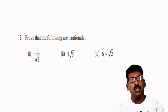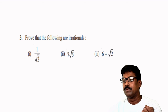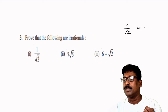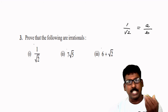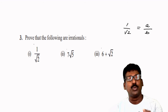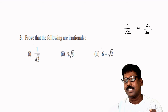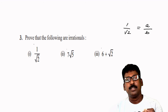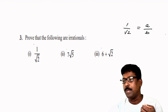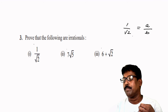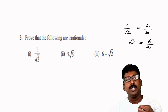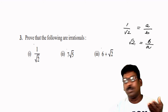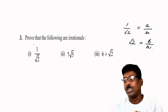For 1 by root 2, you can take it as a by b and do all the steps as usual. Let us assume to the contrary that 1 by root 2 is rational. Then we can find integers a and b, where b is not equal to 0, such that 1 by root 2 equals a by b. Assume that a and b are co-primes. Now, what is root 2? Root 2 you can take as b by a. Then, squaring both sides, as in the case of root 2, you can solve it.